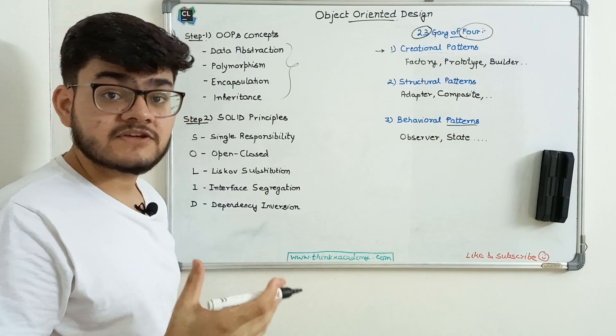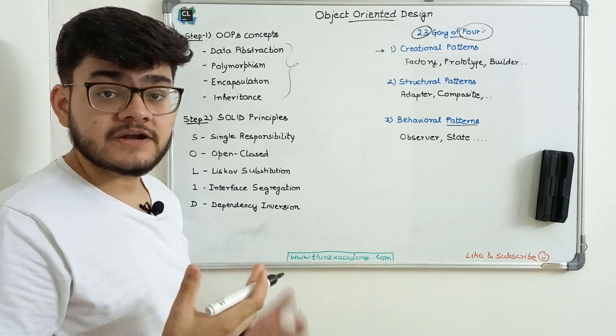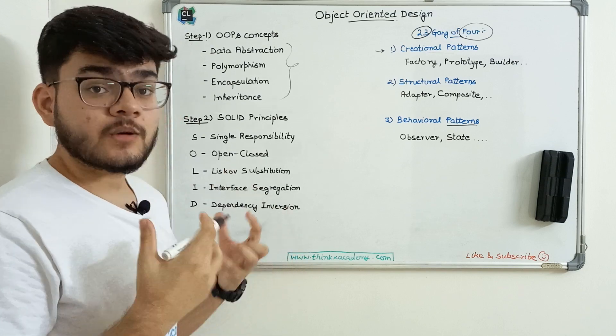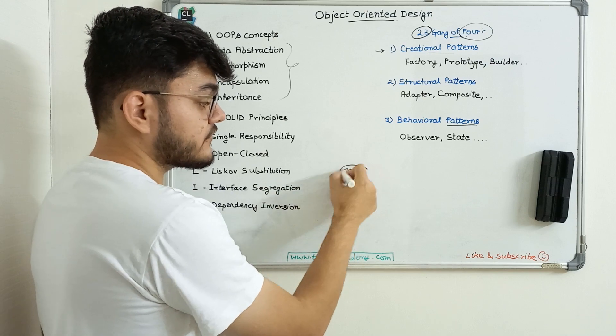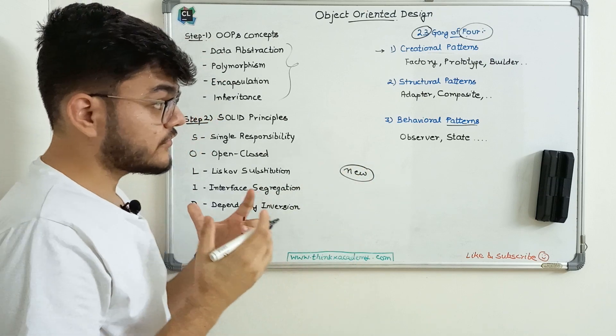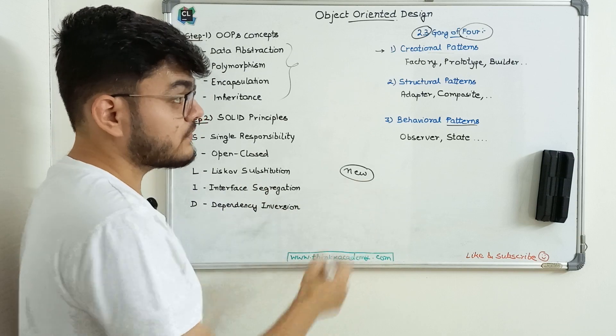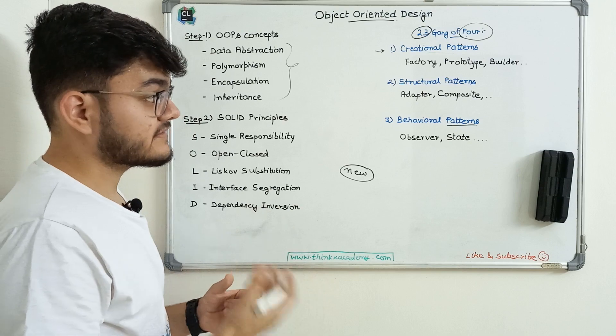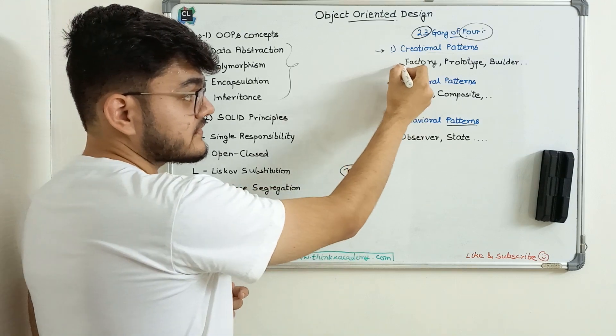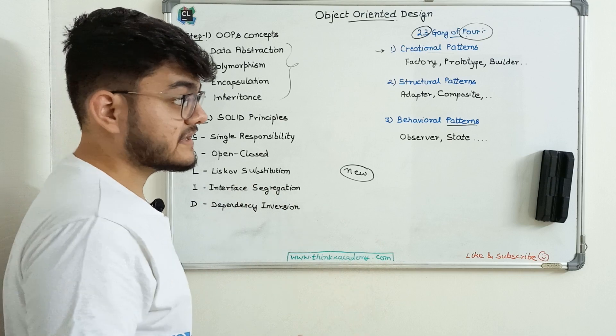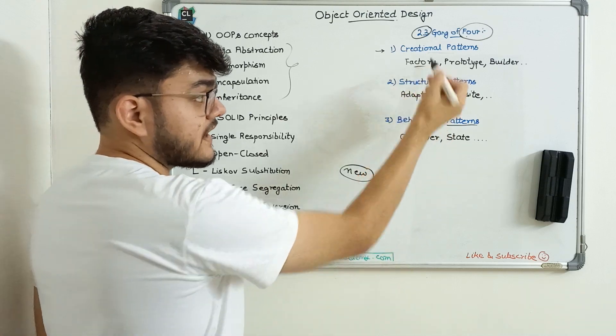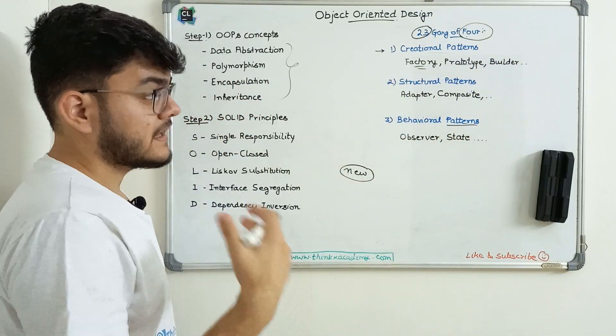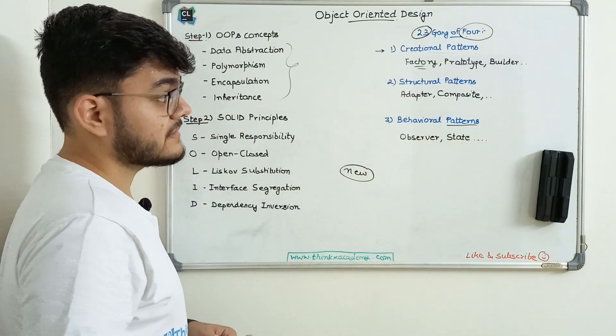Creational patterns deal with creating objects. In object-oriented programming, we create objects. You'll see how to use the new operator optimally and in a good way. Using the new operator is very important—you should give responsibility to object creation. There are several patterns: Factory pattern, Prototype, Builder pattern, Abstract Factory method—four or five in creational patterns.